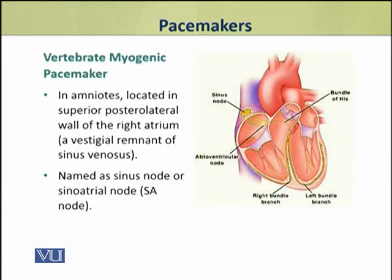Myogenic pacemakers are found in birds, reptiles, and mammals. In these animals, the pacemakers are found in the posterior lateral wall of the right atrium.